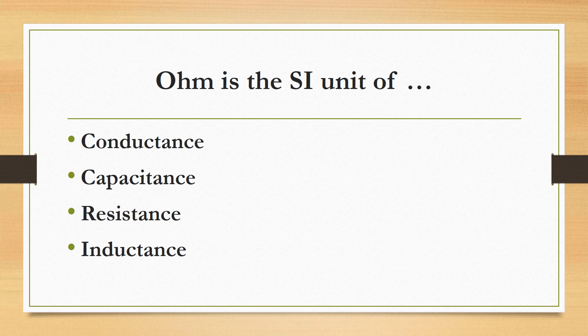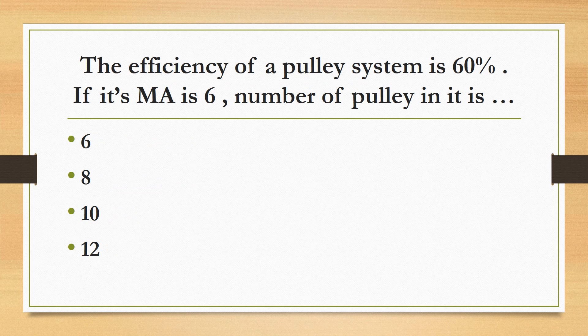The efficiency of a pulley system is 60%. If its mechanical advantage (ME) is 6, the number of pulleys in it is: 6, 8, 10, or 12? The correct answer is 10. The number of pulleys equals the velocity ratio (VR). Efficiency equals ME divided by VR into 100. Solving: 60 = 6/VR × 100, so VR = 10. That's why the number of pulleys is 10.